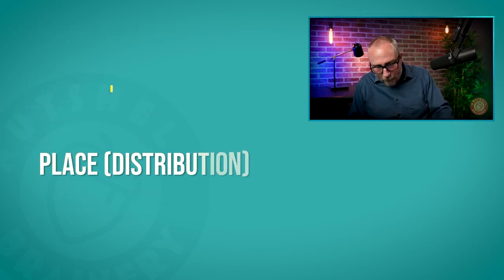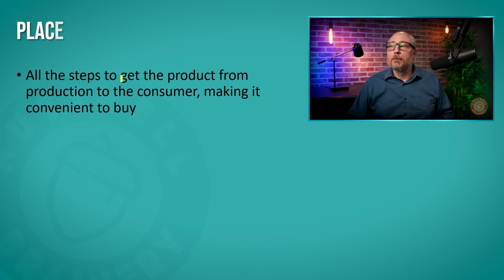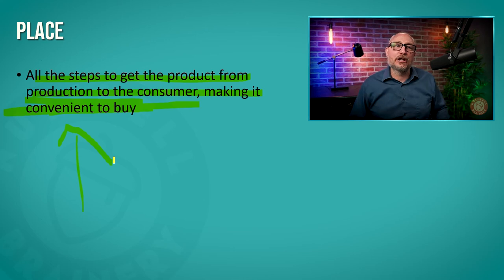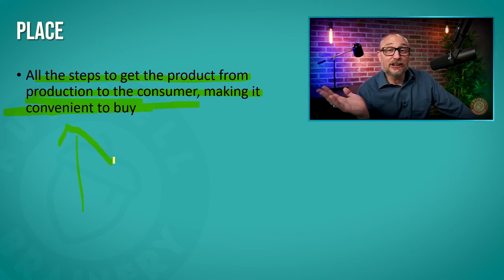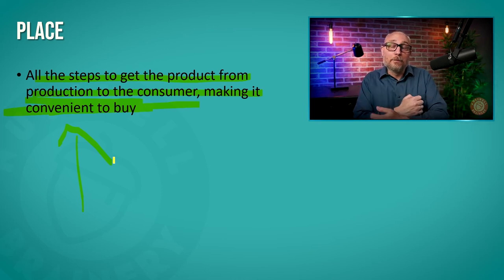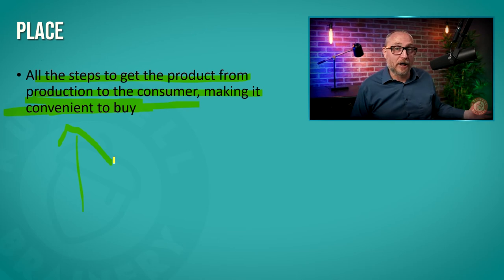So we've got product and price. Now let's look at place, or distribution. Place is all the steps to get the product from production to the consumer, making it convenient to buy. That's what place is all about.